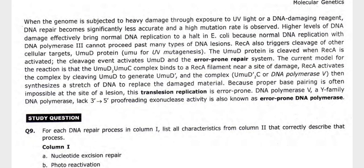When the genome is subjected to heavy damage through exposure to UV light or a DNA-damaging reagent, DNA repair becomes less accurate and a high mutation rate is observed. High levels of DNA damage effectively bring normal DNA replication to a halt in E. coli, because DNA polymerase III cannot proceed past many types of DNA lesions. RecA also triggers cleavage of other cellular targets, including the UmuD protein (Umu for UV mutagenesis). The UmuD protein is cleaved when RecA is activated, activating the error-prone repair system.